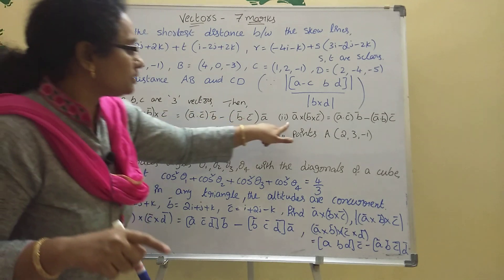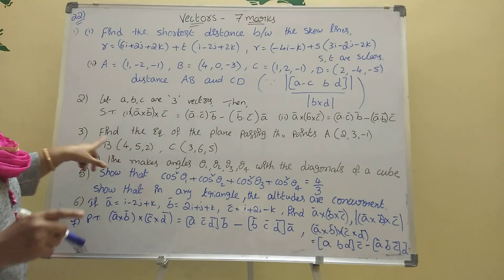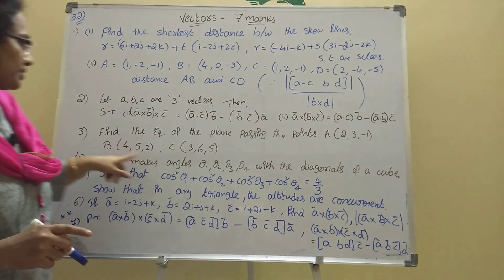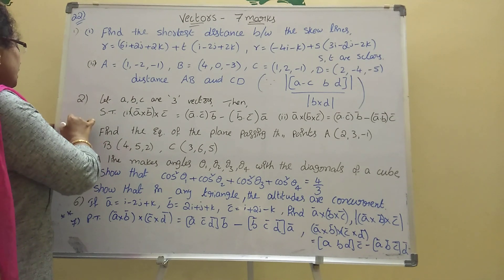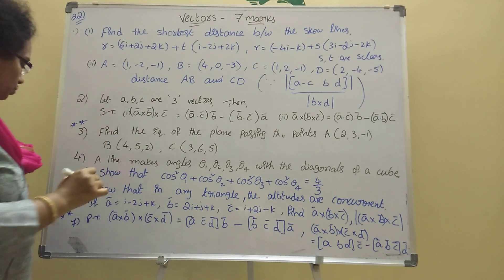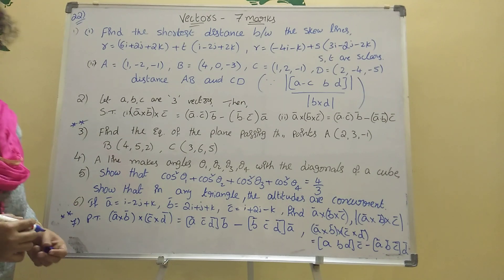Third problem: Find the equation of the plane passing through the points A, B, C. This one is also two stars only. Suppose you do better, the two stars I wrote here are two, third, and seventh one. All others are three stars.